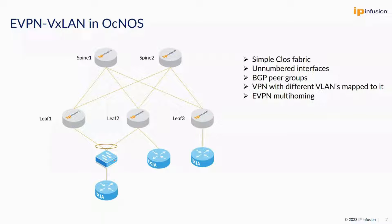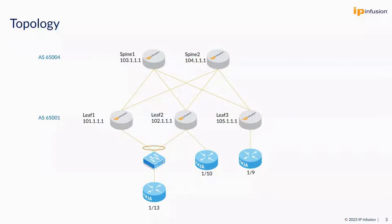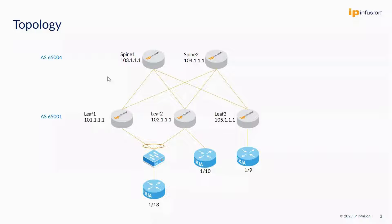Let's quickly jump into the topology configurations. In this demo we have configured all these VPNs in autonomous system 65004 and all the leafs are in 65001. Since we have used only unnumbered interfaces, only loopback IPs have been configured on all these devices. Leaf1 is configured with 101.111, leaf2 with 102, leaf3 with 105, spine1 with 103 and spine2 with 104.